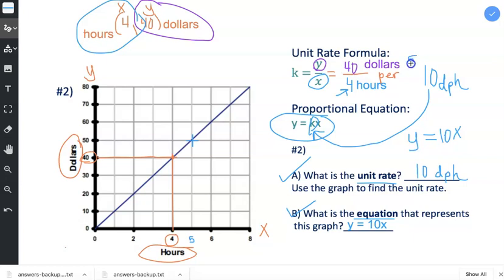Well, 50 divided by 5 is also 10. What if I chose (2, 20)? Well, 20 divided by 2 will also give me $10 per hour.